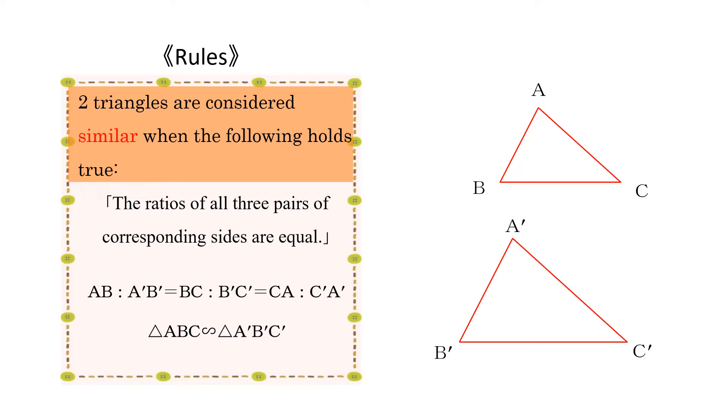Two triangles are considered similar when the following holds true. The ratios of all three pairs of corresponding sides are equal.